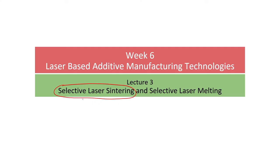In this lecture we will be studying selective laser sintering and selective laser melting. In the previous lecture we have seen stereolithography, which is basically used for manufacturing of polymer-based work parts. We have seen the process of photopolymerization and there are various approaches to carry out photopolymerization using lasers — the vector by vector method and the scanning method or the projection mask method.